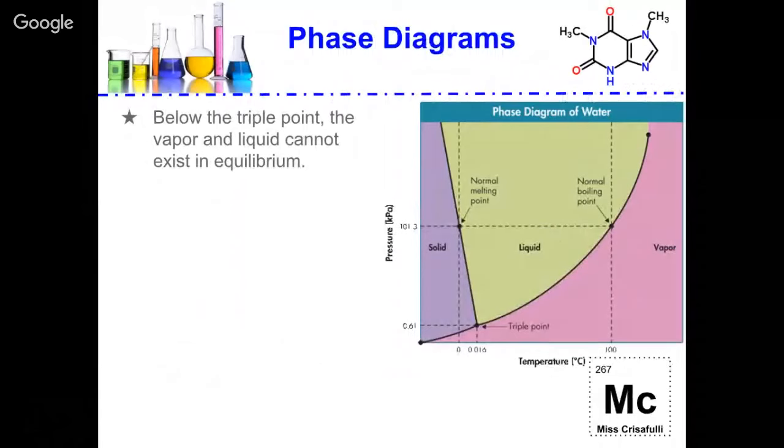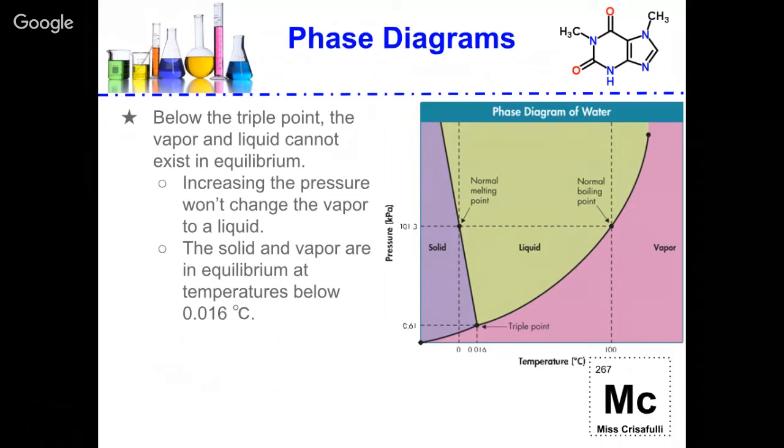Below the triple point, the vapor and liquid cannot exist in equilibrium. Increasing the pressure won't change the vapor to a liquid. The solid and vapor are in equilibrium at temperatures below 0.016 degrees Celsius. With an increase in pressure, the vapor begins to behave more like a solid.